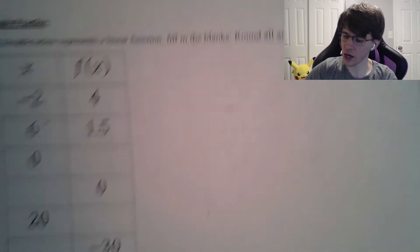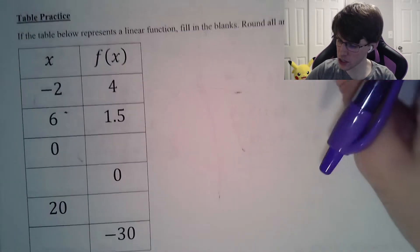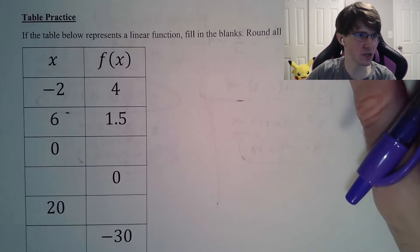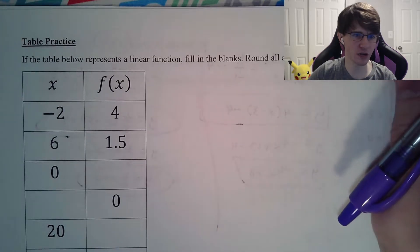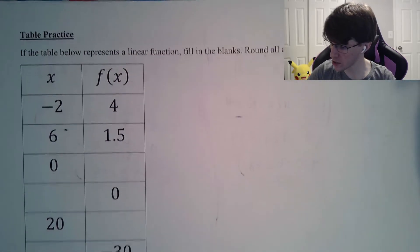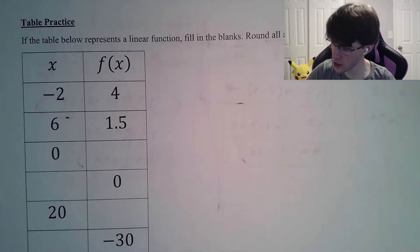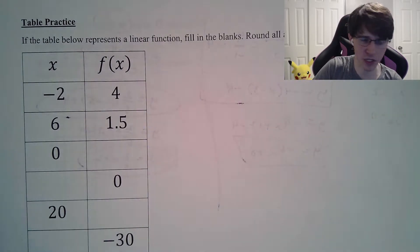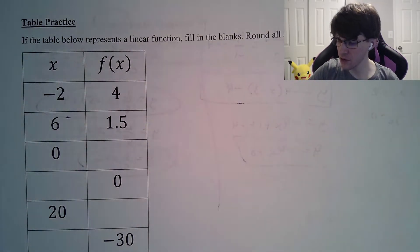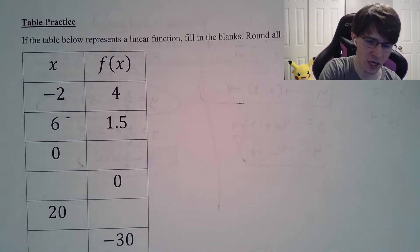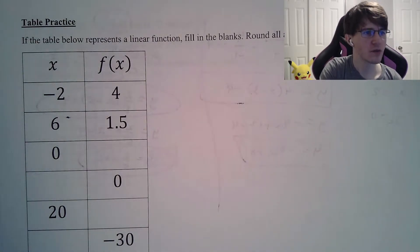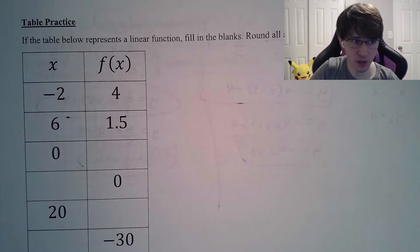We've done our first two pages. Let's continue on to the table practice. It says: if the table represents a linear function, fill in the blanks, round all answers to one decimal place. That means we do have decimals in this question, and that's okay. The very first thing to do is to create the equation of the line.